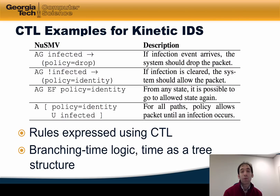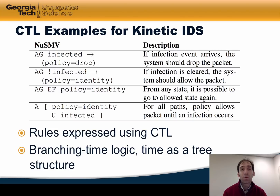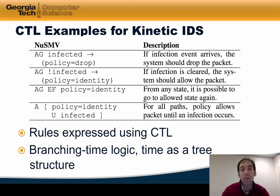Likewise, we can say that if an infection is cleared, the controller should transition to the identity policy. We can also test other properties — for example, we can say that from any state, it's always possible to return to the identity policy, and for all paths, a policy should allow a packet until an infection occurs. One of the powerful aspects of CTL is that properties can be checked before the program ever executes. In our experience with Kinetic, many programmers find errors in their finite state machine logic and their policies before they even run the program. Kinetic actually executes the NuSMV model checker on the programs that you define as you start the controller, so it's very easy to determine whether the control program has errors before it ever runs.